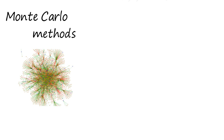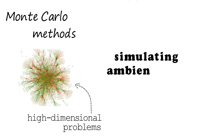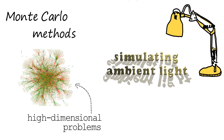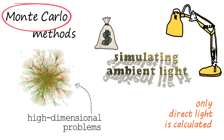It also turns out that Monte Carlo methods are very useful in high-dimensional problems. In computer games, the problem of simulating ambient light is considered very computationally expensive, so often only direct light from light sources is calculated. However, with Monte Carlo, we can simulate ambient light cheaply, resulting in amazing images.